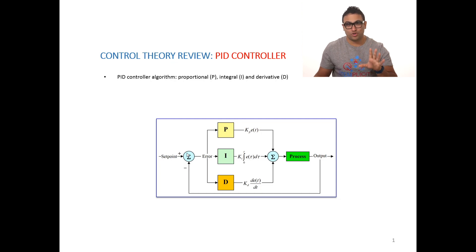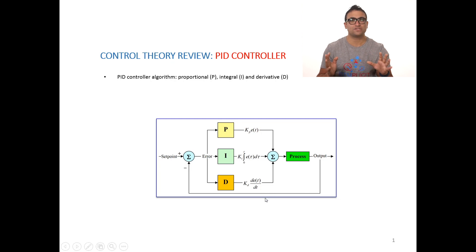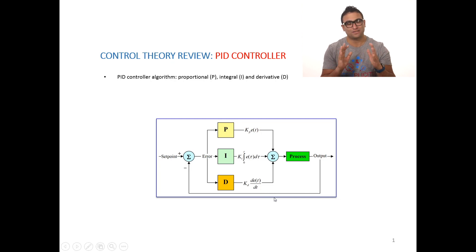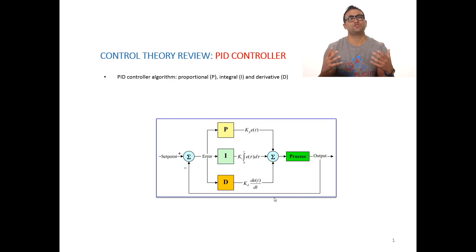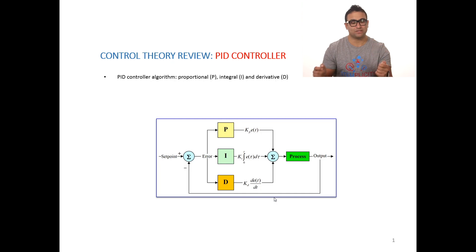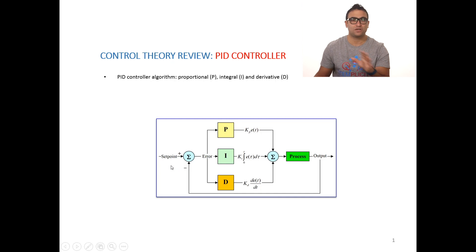Just to clarify — we used to have a sensor before. Here, we're going to assume that the sensor's transfer function is basically one, which means what we're measuring is the exact same unit as what we're going to use for comparison. Don't worry about it — just assume a sensor of one. Here we have our error signal.